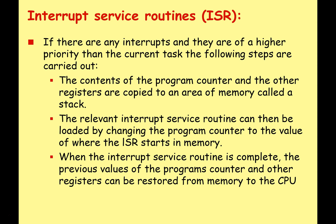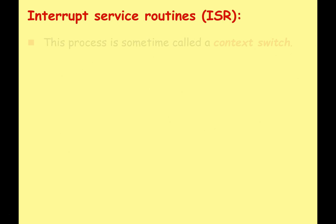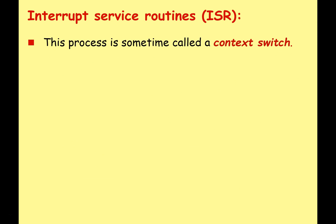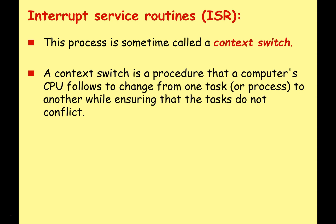If there are any interrupts and they are of higher priority than the current task, the following steps are carried out: the contents of the program counter and the other registers are copied to an area of memory called the stack. The relevant interrupt service routine can then be loaded by changing the program counter to the value of where the ISR starts in memory. When the interrupt service routine is complete, the previous value of the program counter and the other registers can be restored from memory to the CPU. This process is sometimes called a context switch — a procedure that a computer's CPU follows to change from one task or process to another, while ensuring that the tasks do not conflict.